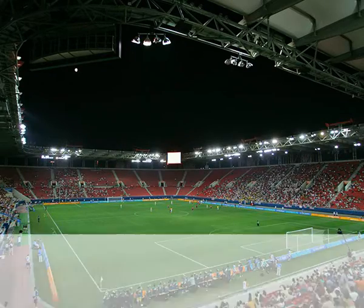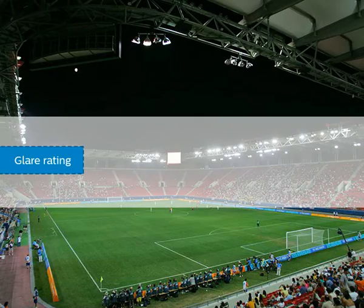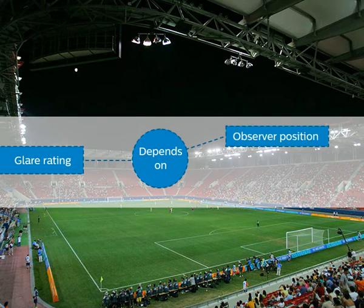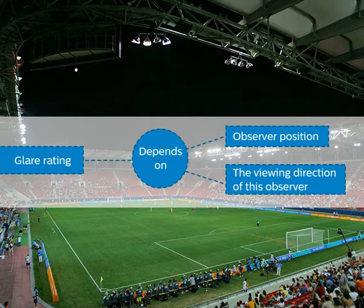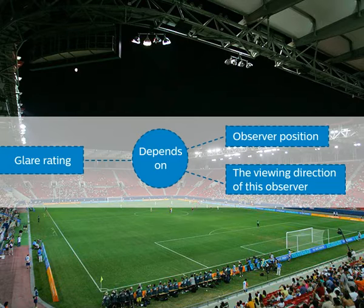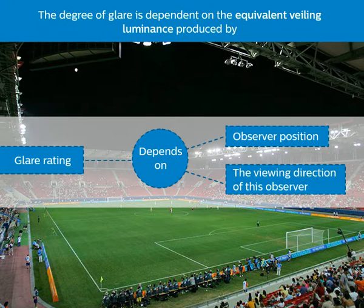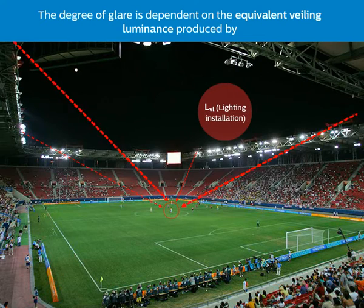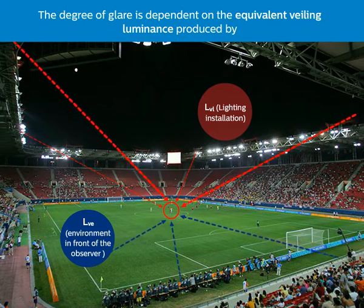In outdoor sports, the degree of glare rating of a lighting installation depends on the observer position and on the viewing direction of this observer. For a given observer position and a given viewing direction below eye level, the degree of glare is dependent on the equivalent veiling luminance produced by the lighting installation and the equivalent veiling luminance produced by the environment in front of the observer.